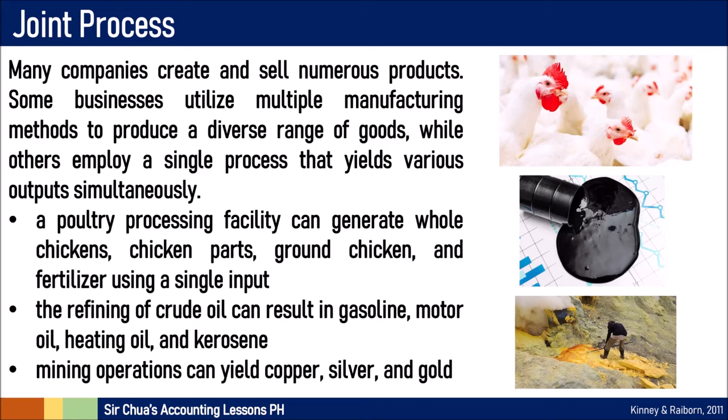Let's talk about Joint Processes. Many companies create and sell numerous products — especially larger companies, they don't focus on just one type of product line. Some businesses utilize multiple manufacturing methods to produce a diverse range of goods, and others employ a single process but yield many different outputs. In Joint Processes, we have one single origin but many possible results.